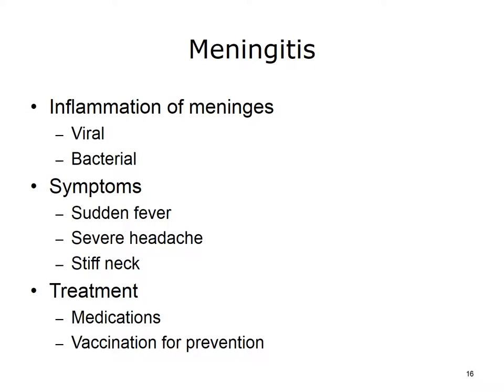Meningitis is the inflammation of the meninges, the thin tissue that surrounds the brain and spinal cord. There are several types of meningitis. The most common is viral meningitis, which develops when a virus enters the body through the nose or mouth and travels to the brain. Bacterial meningitis is rare but can be deadly. Symptoms include a sudden fever, a severe headache, and a stiff neck. Treatment can prevent serious problems, including death. Vaccines can prevent some of the bacterial infections that cause meningitis.